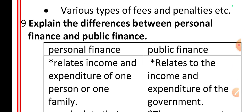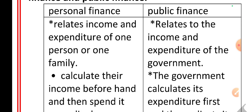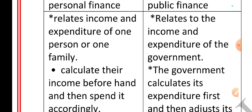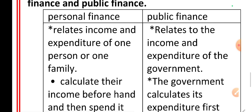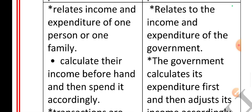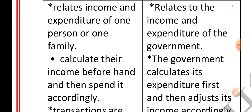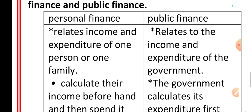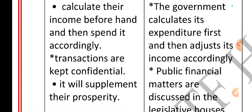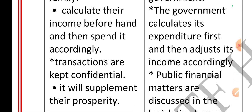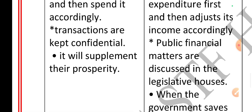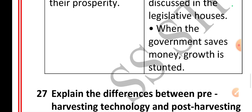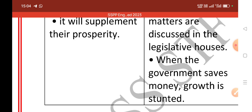Explain the difference between personal finance and public finance. Personal finance relates to the income and expenditure of one person or one family. Public finance relates to the income and expenditure of the government. Personal finance calculates income beforehand and then spends accordingly. Public finance calculates expenditure first and then adjusts income accordingly. Personal finance transactions are kept confidential. Public financial matters are discussed in legislative houses. Personal finance supplements individual prosperity. In public finance, when the government saves money, growth is stunted.